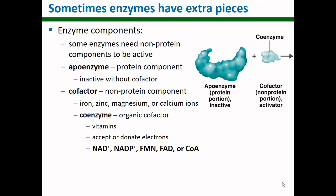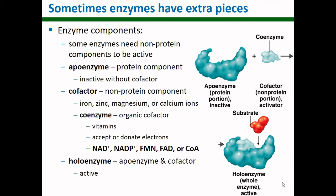Once you have all of the pieces of your enzyme — your apoenzyme and your cofactor together — you have a functional unit called a holoenzyme. That holoenzyme can then bind to the substrate and the enzyme can do its work.